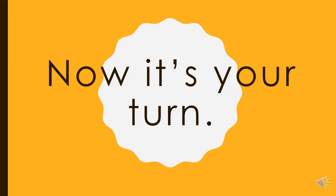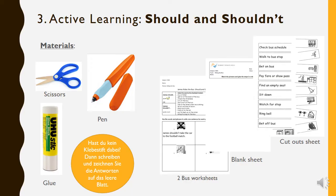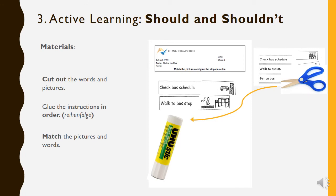I hope you enjoyed the story of James on the bus. Now it's your turn for our active learning today. You will need scissors, a pen and a glue stick and the sheet from your worksheet pack. If you don't have any glue, you can draw and write the answers on the blank sheet. First, cut out the words and the pictures and glue them in order on the blank worksheet. Make sure that the pictures match the words.